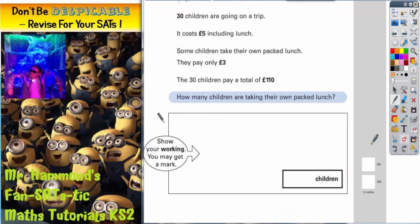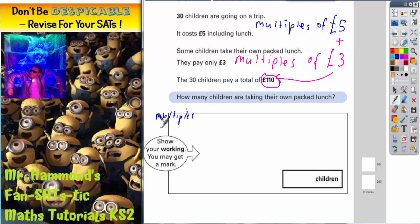Well, let's scroll down so we don't need a picture. First thing we need to do is realize that if some people are paying £5, that means we're going to be interested in multiples of £5, and other children are paying only £3. So we're going to be interested in multiples of £3. So what we're looking for is a multiple of £5 added to a multiple of £3 that gives us a total of £110. So let's start by writing down multiples of 5.